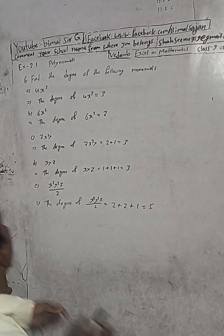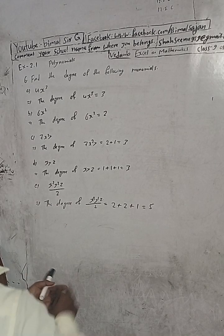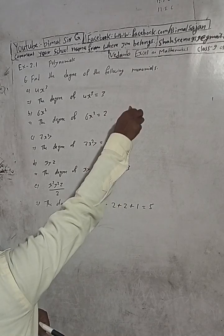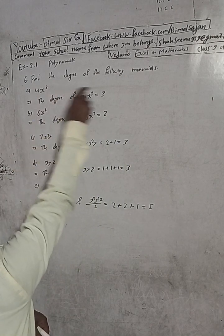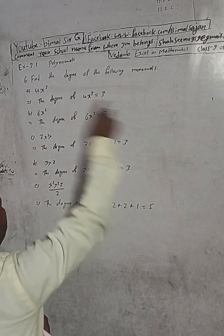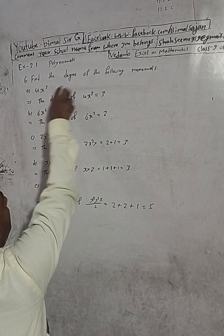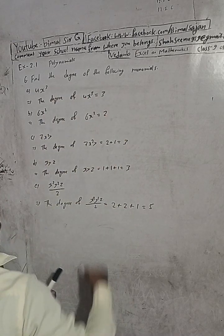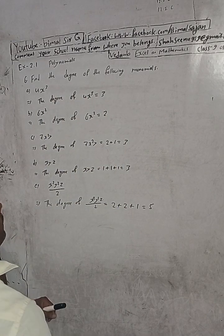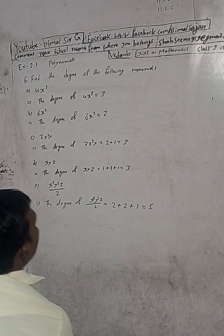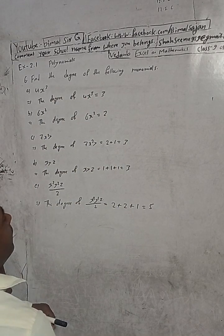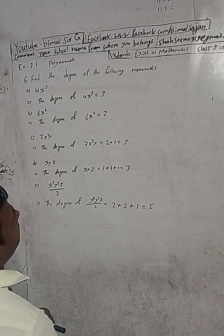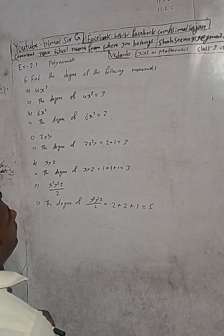Find the degree of the following monomials. Monomial means a single term. If the term is the same connected by plus or minus, they are: monomial, binomial, trinomial, polynomial.